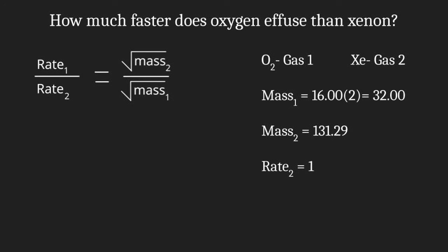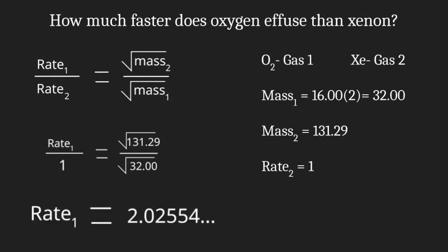Now, we're going to plug in our givens. So we have rate₁ divided by 1 equals the square root of 131.29 divided by the square root of 32. And solving this by dividing rate₁ by 1 gives us just rate₁, and doing the math on the right side gives us 2.02554.